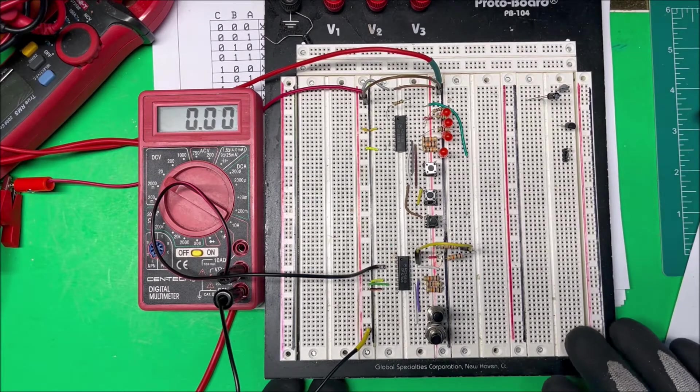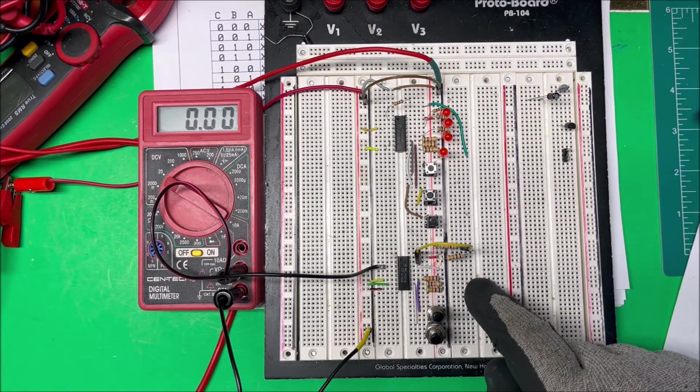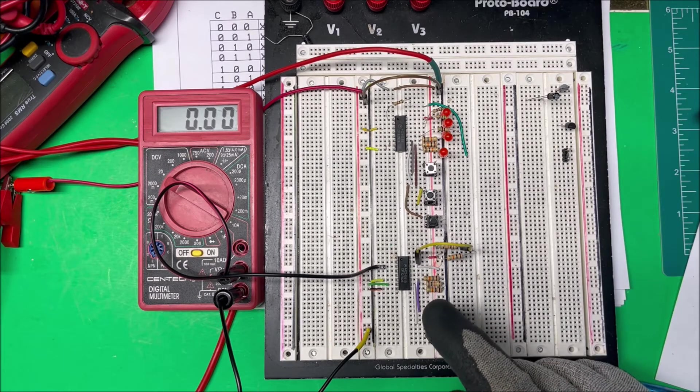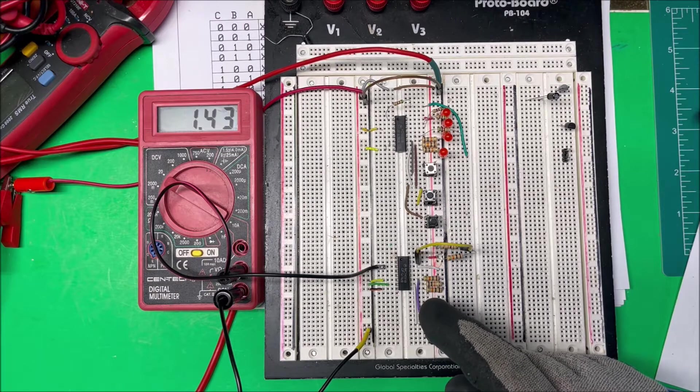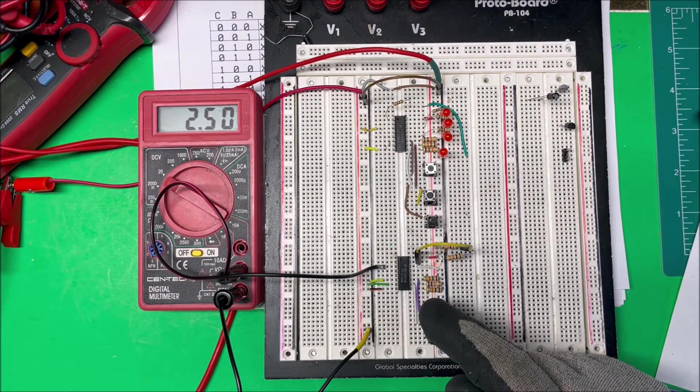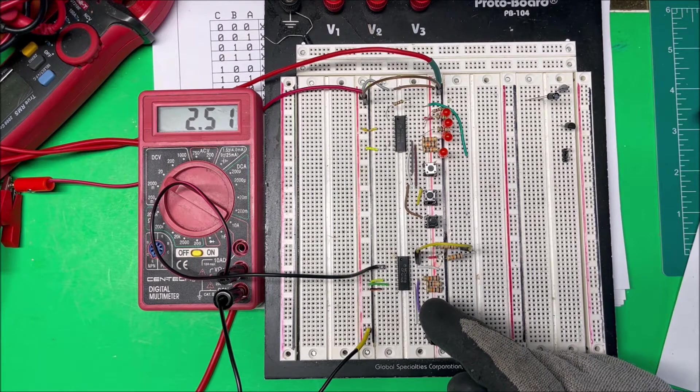All right, so down here this is my multiplexer, and this is pin 1 here, or this is A, and then that gives me X1 is on, and it gives me 2.5 volts there. I just have a voltage divider over here.